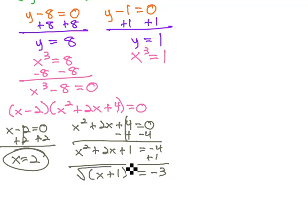Clear the square by taking the square root of both sides, giving us x plus 1 equals plus or minus. We can pull the negative out of the radical as an i, root 3.